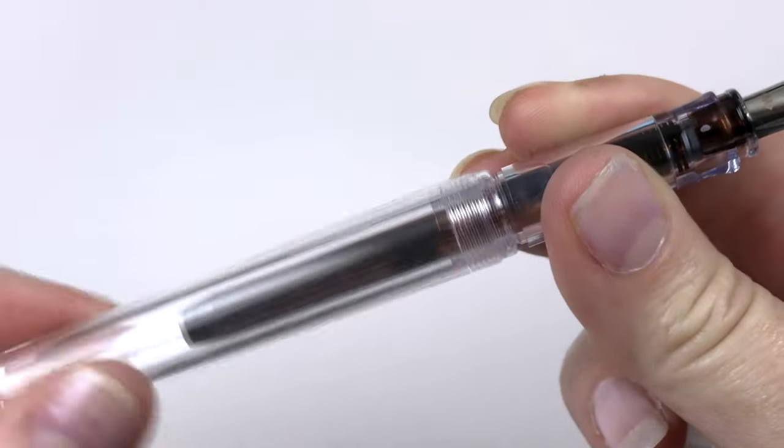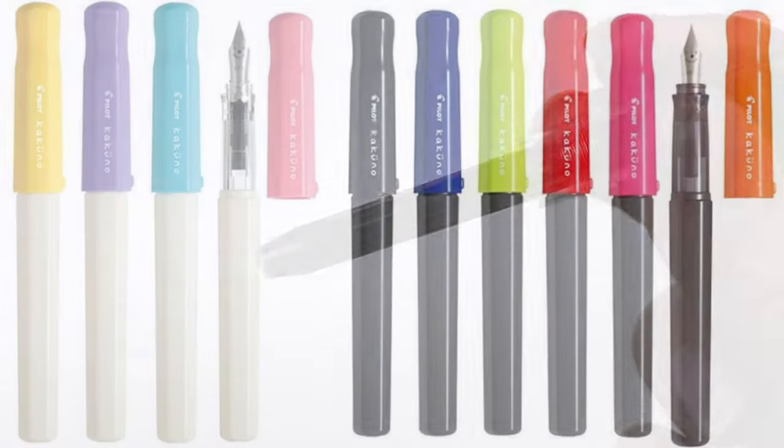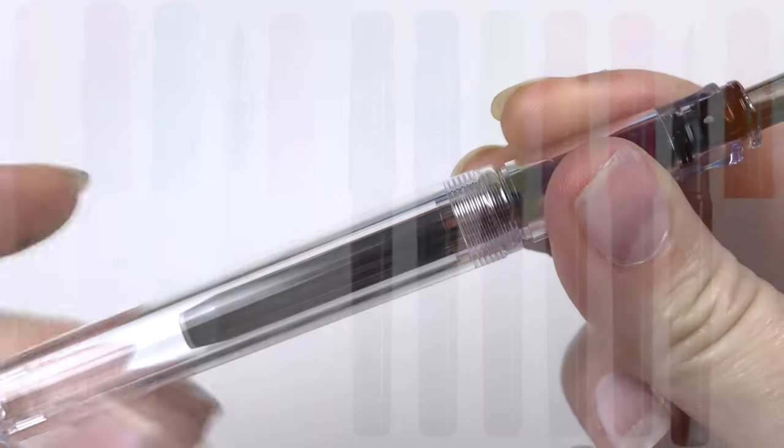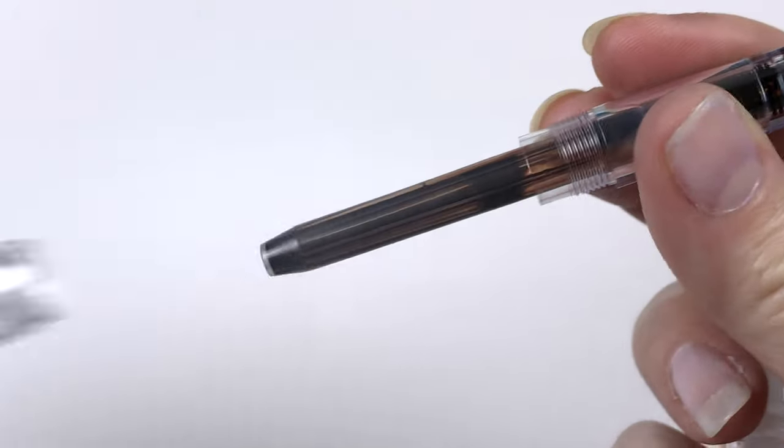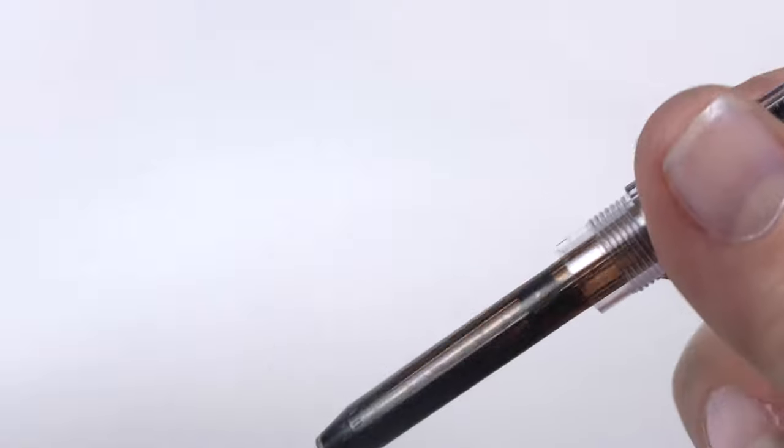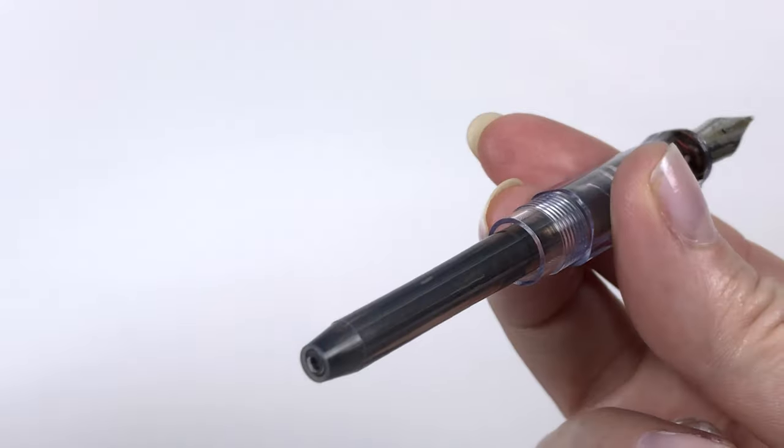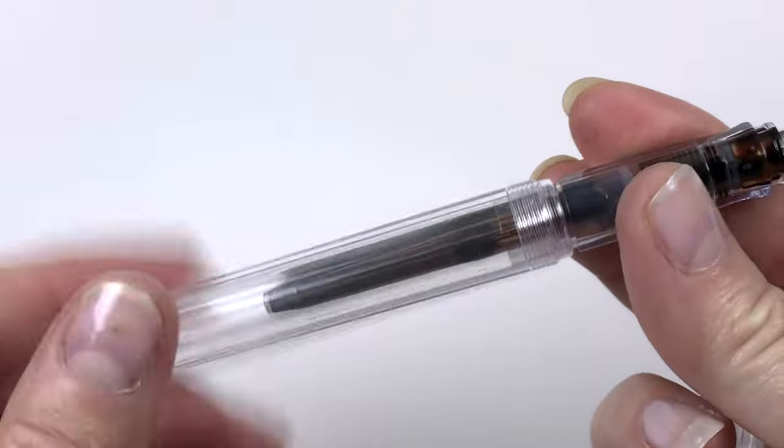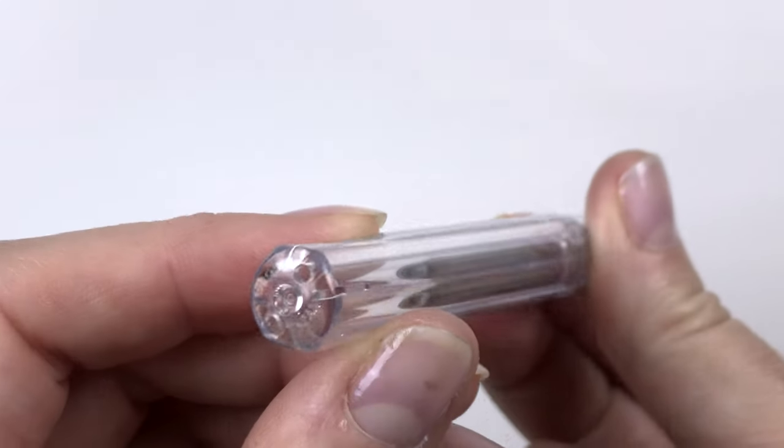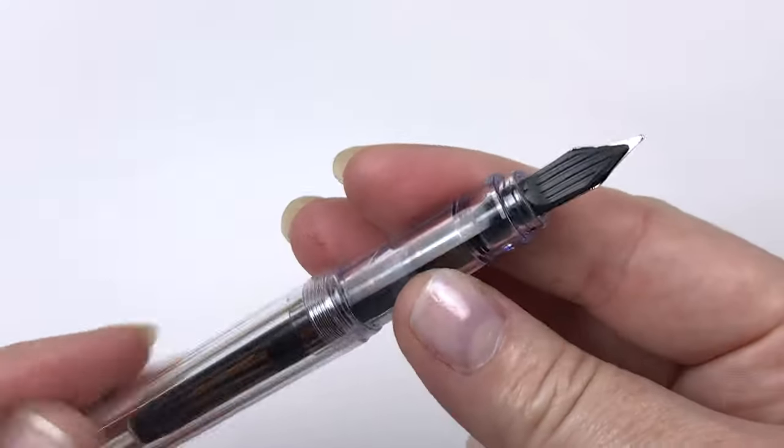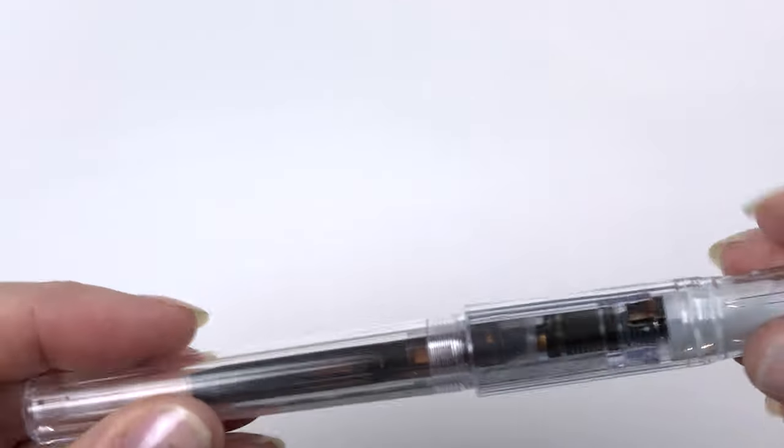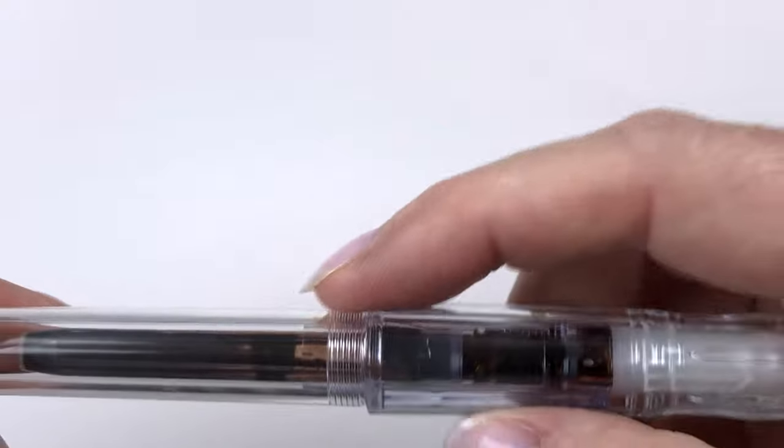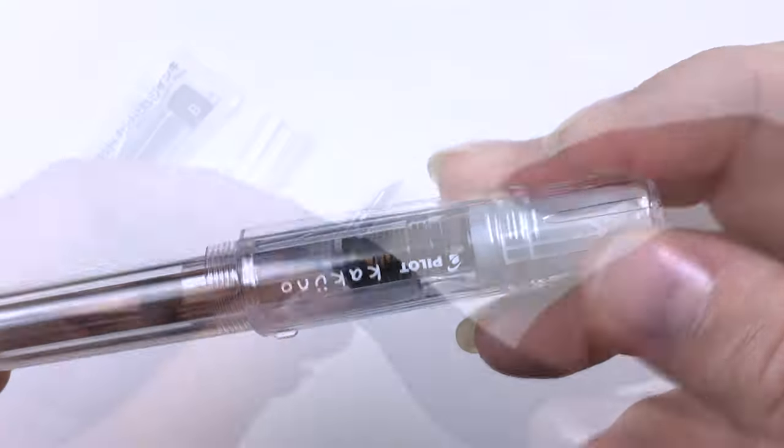This particular one is a clear demonstrator. You can get them in all different colors, but I like this one. It doesn't look as cheap as the solid color ones. It houses a cartridge, but you can also get a converter for it. I just use the cartridges because they're super easy and the converters are kind of expensive. You can clean these cartridges out and reuse them. It has a little roll stop on the lid, which is nice and simple.